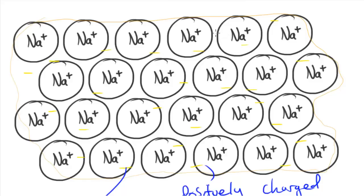In this video I'm going to be taking a look at giant metallic lattice structures. These are basically structures which are made by metals, and metals tend to form giant metallic lattice structures when they're in their solid form.